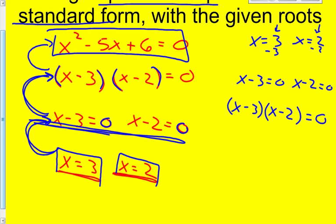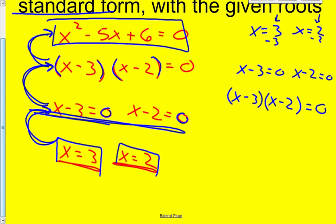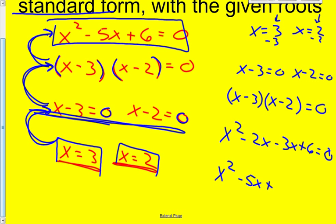Now how do we get those two binomials to be a trinomial? We simply multiply by foiling. First times the first, outside, inside, and last. So my answer, that trinomial, when I combine like terms, is x squared minus 5x plus 6 equals 0.